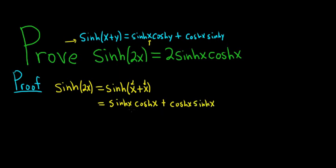So these are exactly the same thing. Sinh(x)cosh(x) is exactly the same thing as cosh(x)sinh(x). So we have two of them. So this is just 2sinh(x)cosh(x). And that's precisely the right-hand side of what we were trying to show. That's it.